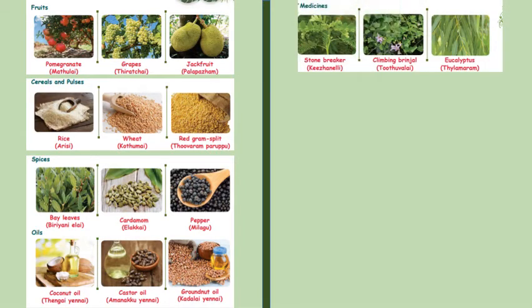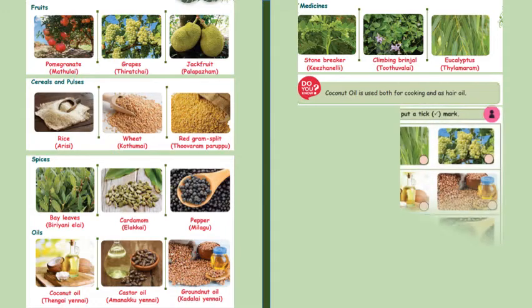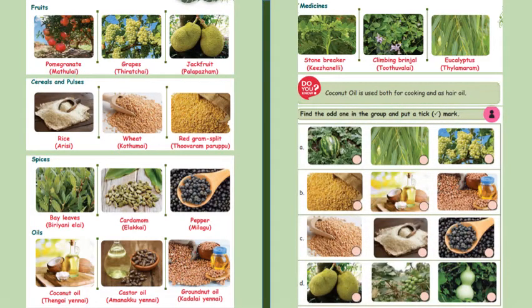Medicines like stone from stone breaker, climbing brinjal and eucalyptus. These all we get from the plants. Coconut oil is used both for cooking as well as hair oil. Here we need to find the odd one and put a tick mark. We have two fruits and eucalyptus is the odd one. Then we have two types of oil, so the first one is the odd one.